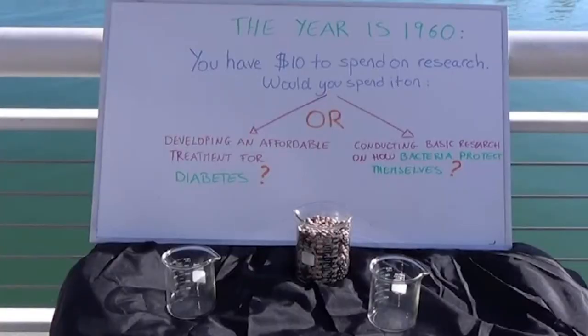If it's the year 1960 and you had $10 to give to science, would you spend it on A, developing an affordable treatment for diabetes, or B, figuring out how bacteria protect themselves?